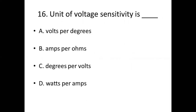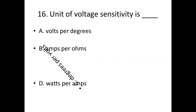Sixteenth bit. Unit of voltage sensitivity is dash. Option A: volts per degrees. Option B: amps per ohms. Option C: degrees per volts. Option D: watts per amps. Answer: Option C, degrees per volts.